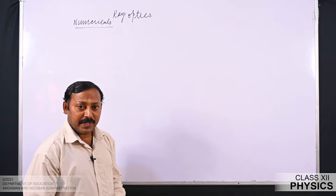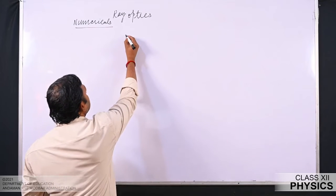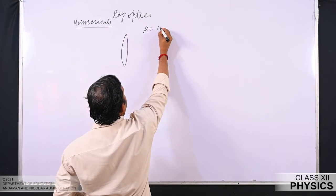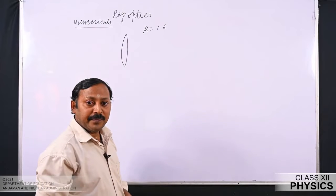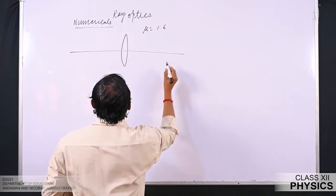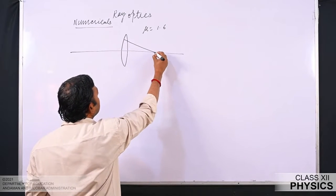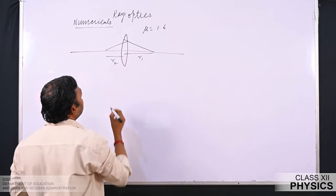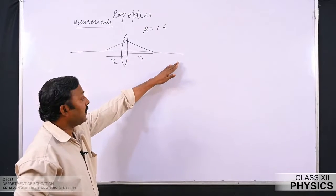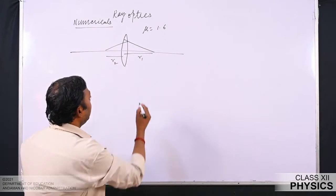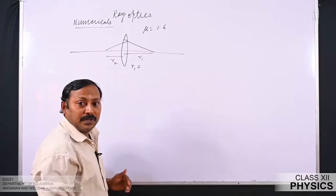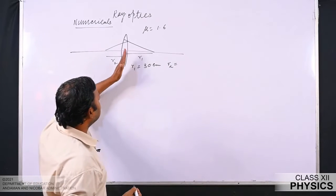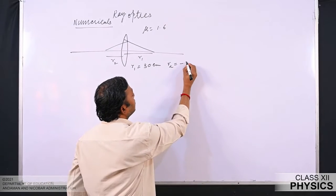We have a double convex lens whose refractive index is mu equal to 1.6. The radius for the first surface R1 falls towards the positive side of the coordinate system and R2 towards the negative side. Therefore R1 equal to 30 centimeter and R2 equal to minus 30 centimeter.